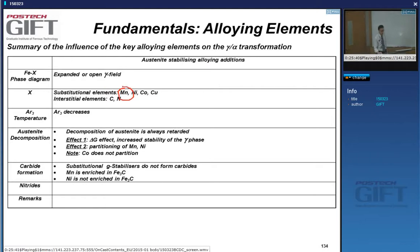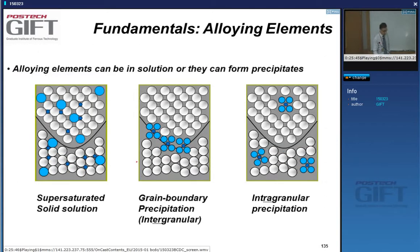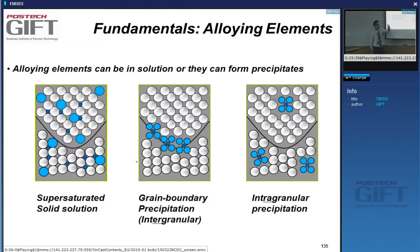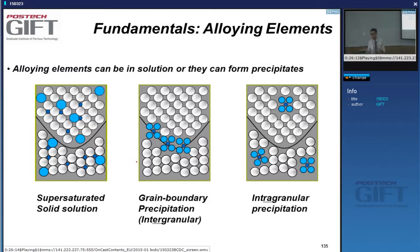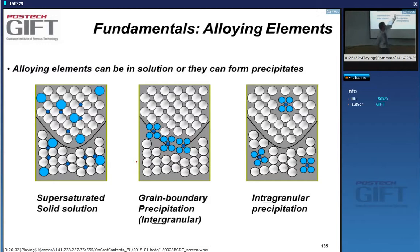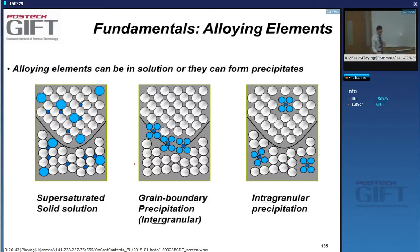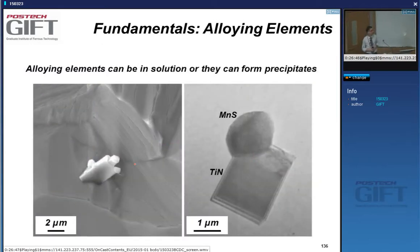The elements discussed so far were assumed to be in solution — interstitial for carbon, substitutional for manganese. As more alloying elements are added to achieve higher strength, there will come a point where the solution is supersaturated beyond the solubility limit and precipitates form. Precipitates can form at grain boundaries or inside the grains. There are many precipitates in steel that are important; we try to control them through composition.